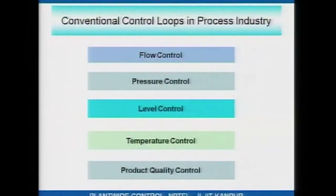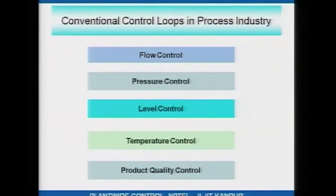Most control loops in the process industry fall into one of five categories: flow control, pressure control, level control, temperature control, and quality control — which could be product quality, raw material quality, or composition control somewhere inside the process. Now we will look at the characteristics of flow loops, pressure loops, level loops, and so on.